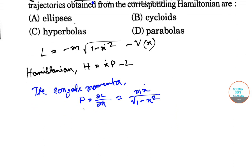From this, x-dot can be expressed as P divided by root over of (M squared plus P squared).